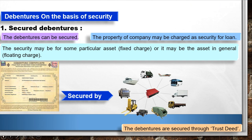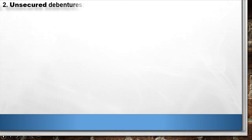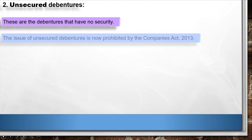2. Unsecured Debentures: These are debentures that have no security. The issue of unsecured debentures is now prohibited by the Companies Act 2013.